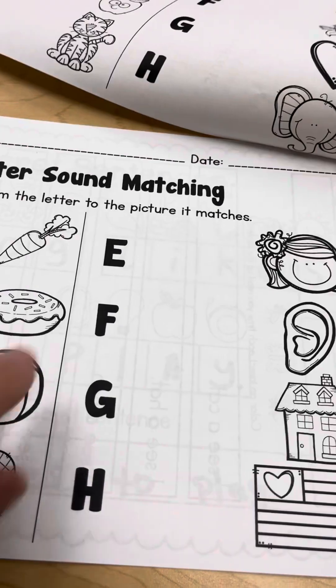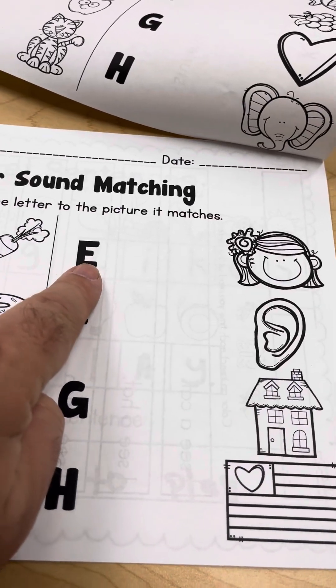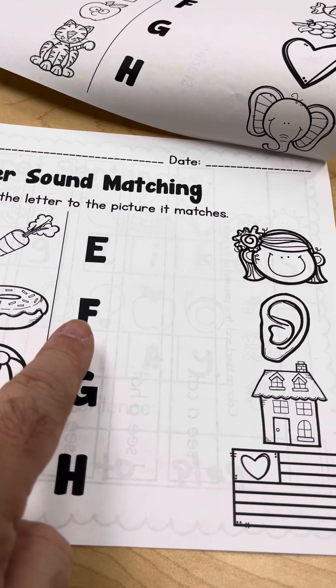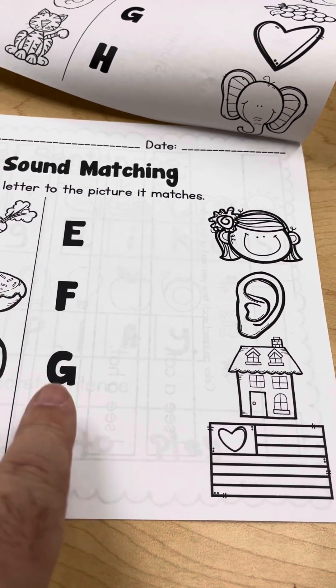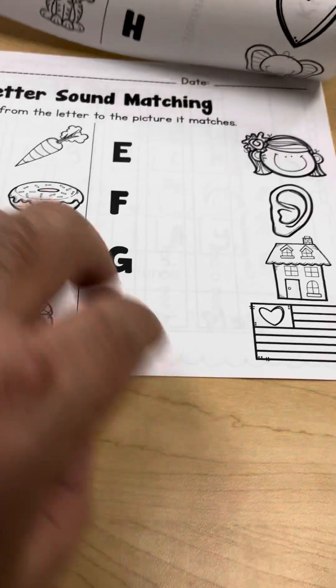So they're connecting the letter E, ear, F, flag, girl, house. They're matching the letter sound to the object.